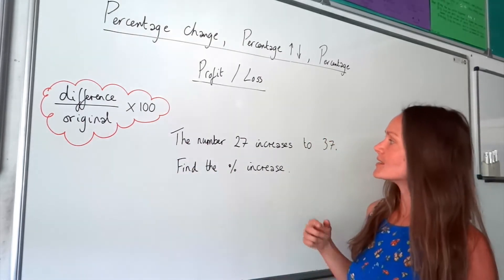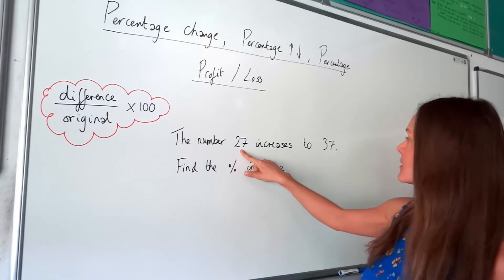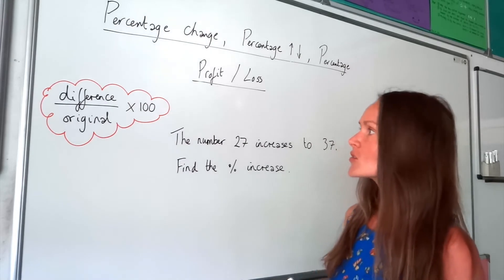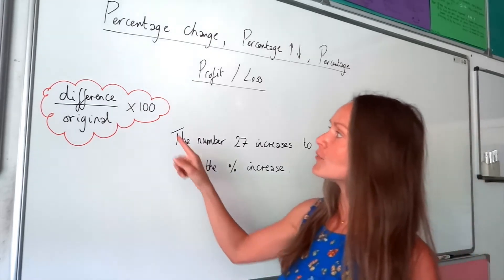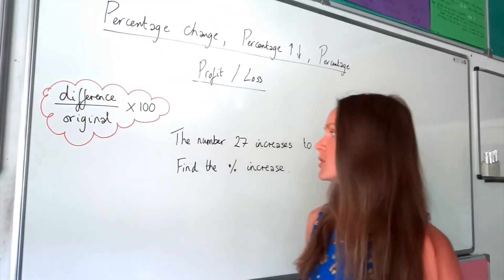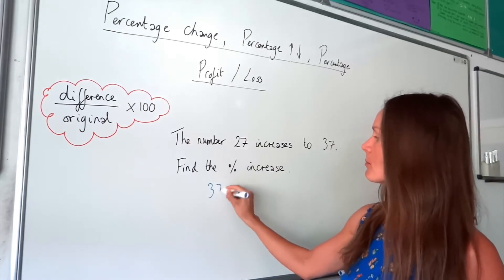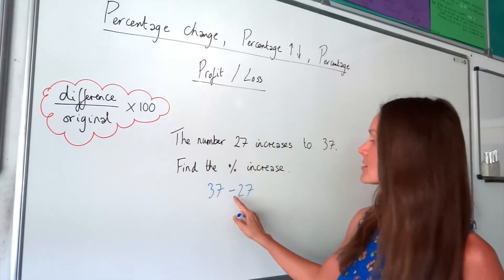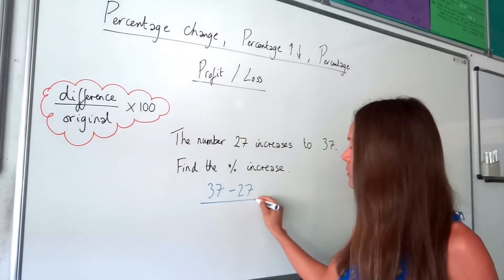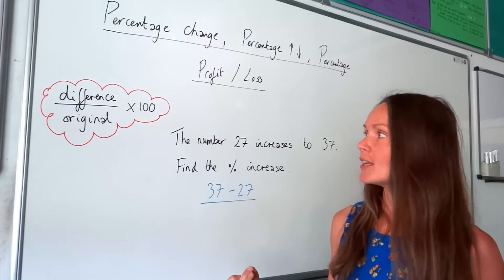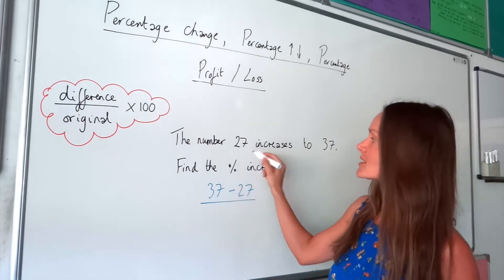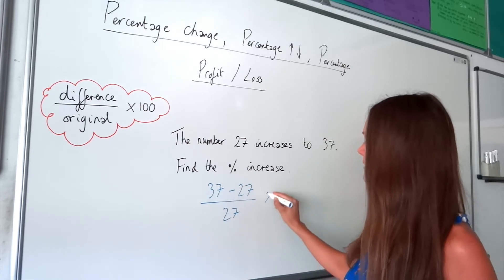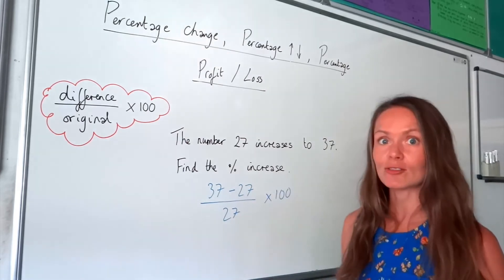So in the first question it says the number 27 increases to the number 37 — find the percentage increase. Remember we have to start by finding the difference between these numbers. So you do the larger number, 37, minus the smaller one, because difference means subtract. Then you have to divide by the original value, which is the number it started as, so 27 in this case, not forgetting to multiply by 100 at the end.